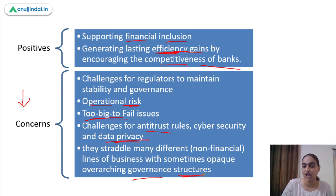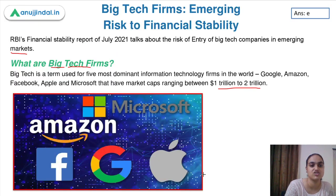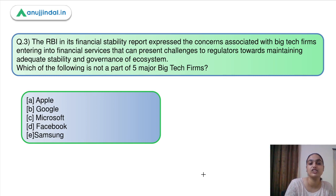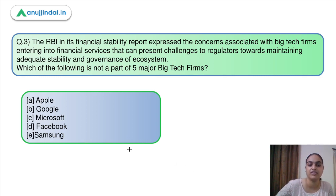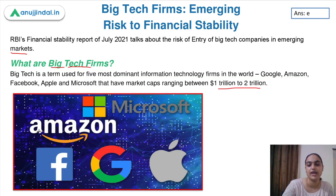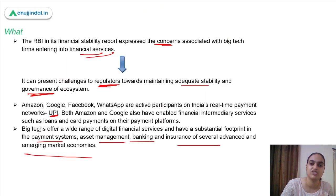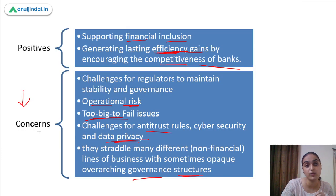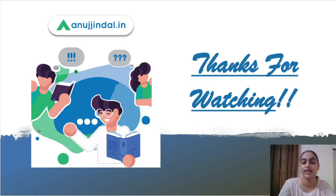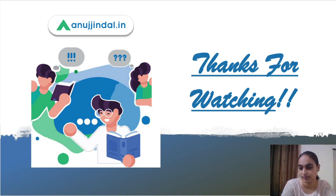The answer to the question — which of the following is NOT part of the five major big tech firms — is option E: Samsung. This concludes the session on the concerns expressed in the RBI Financial Stability Report. Thank you so much.